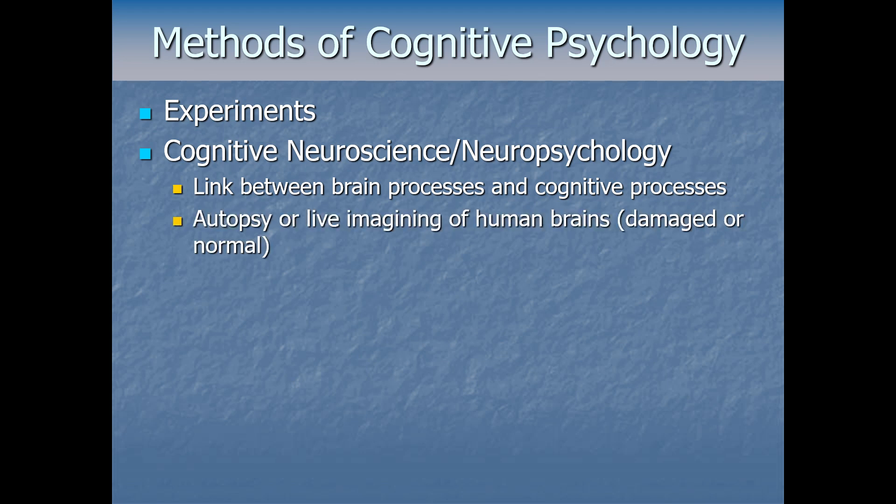Sometimes that information can come from an autopsy after someone's died to examine what was going on in their brain. But much more common nowadays is live imaging of human brains — seeing the living brain in action. When we study people with brain damage, that specialty is called neuropsychology. Or sometimes we might scan the brains of healthy people doing cognitive tasks, which is what we call cognitive neuroscience. We'll dive deeper into those techniques in an upcoming topic.